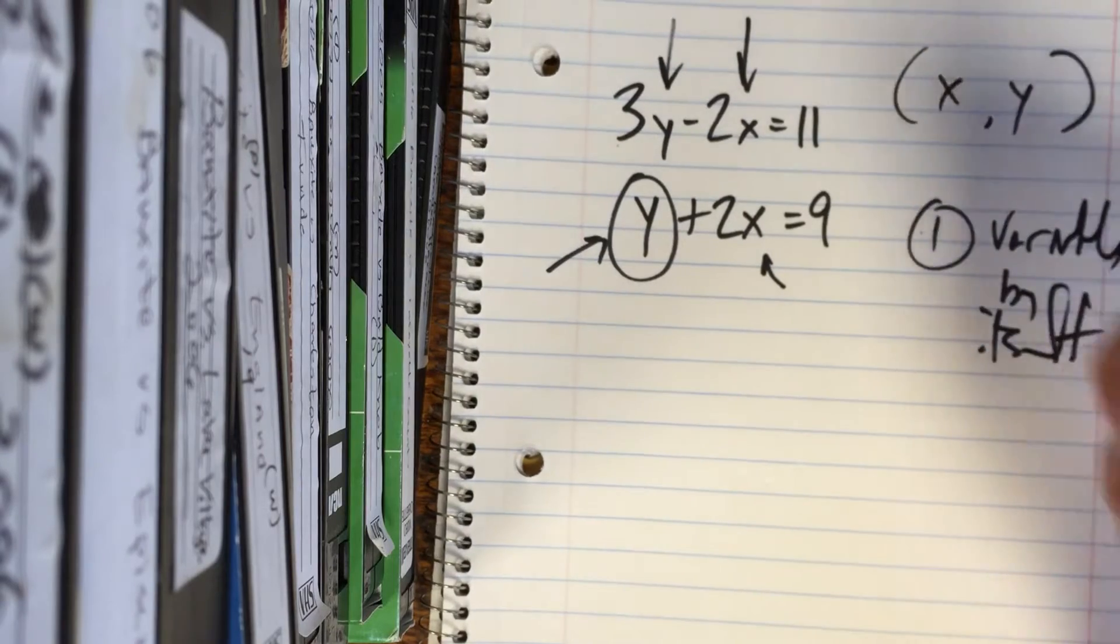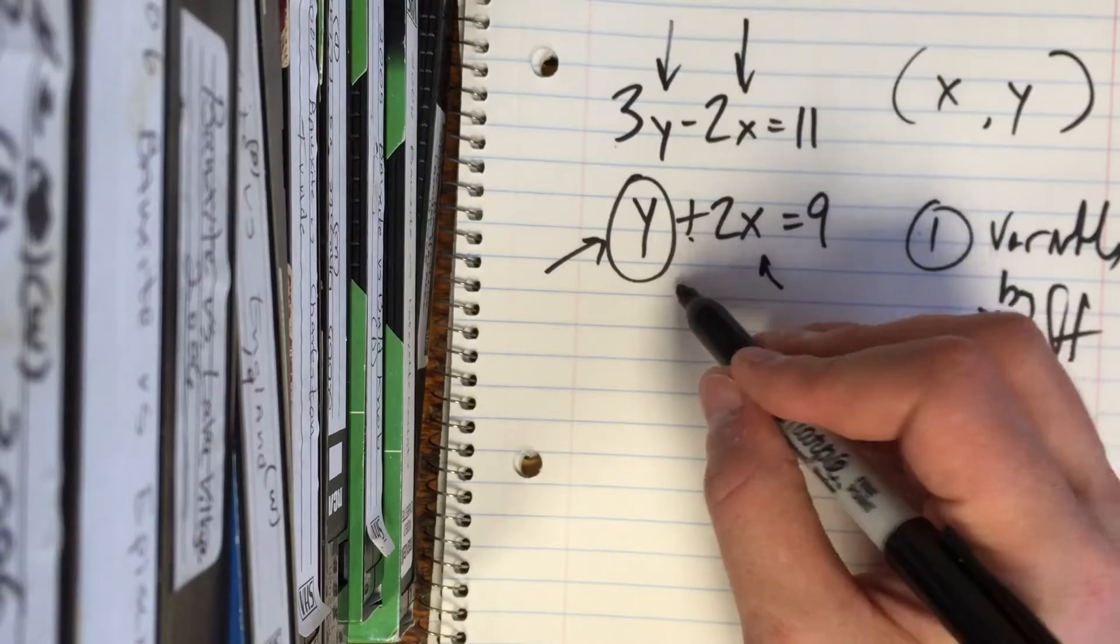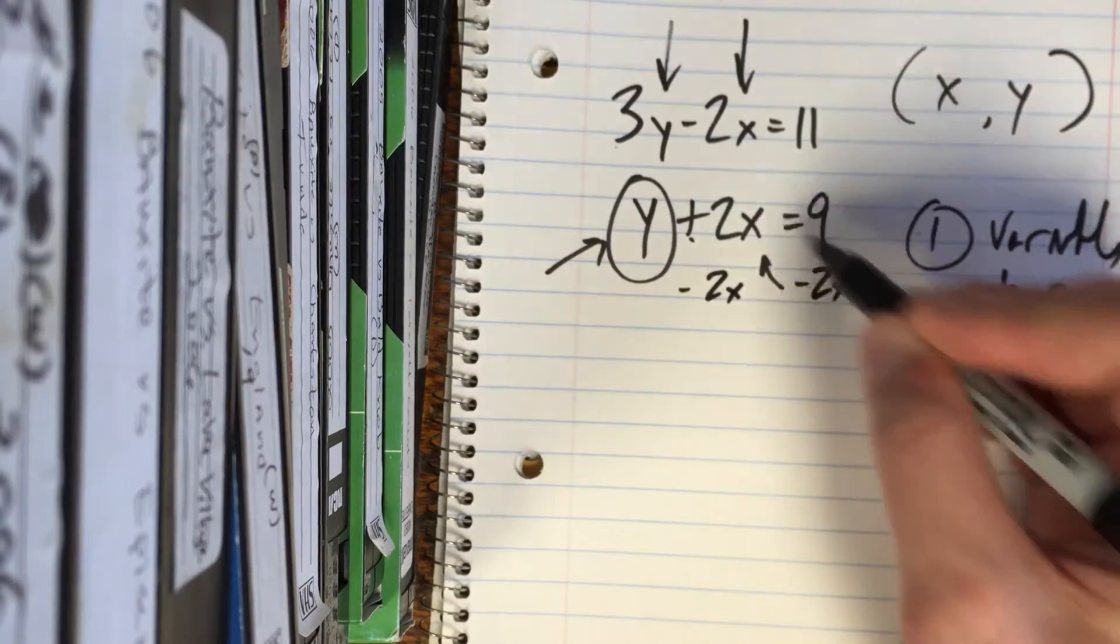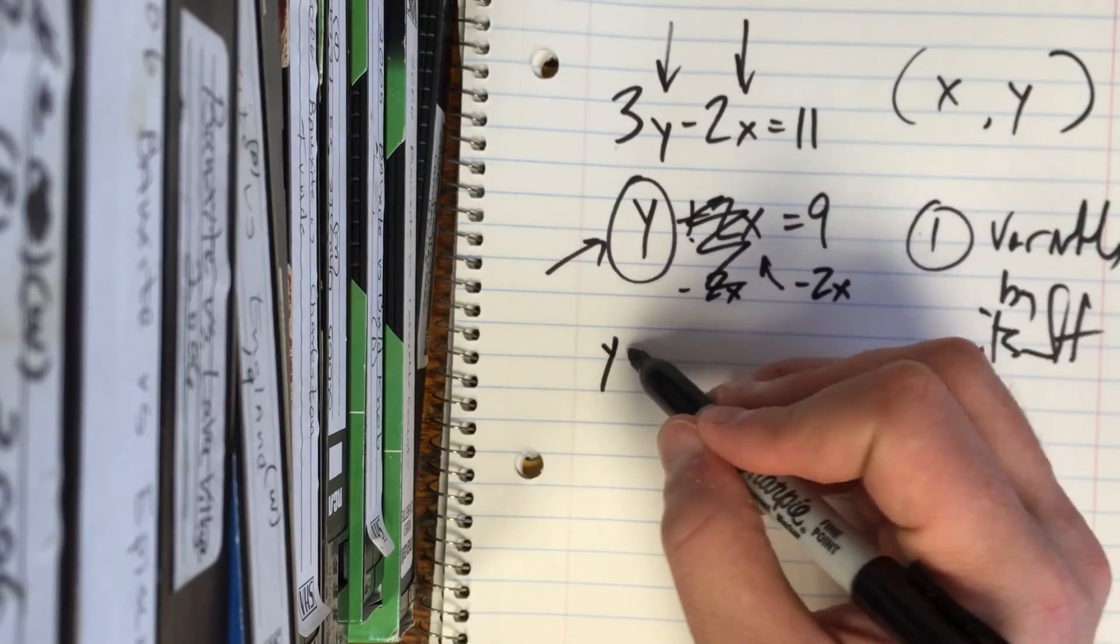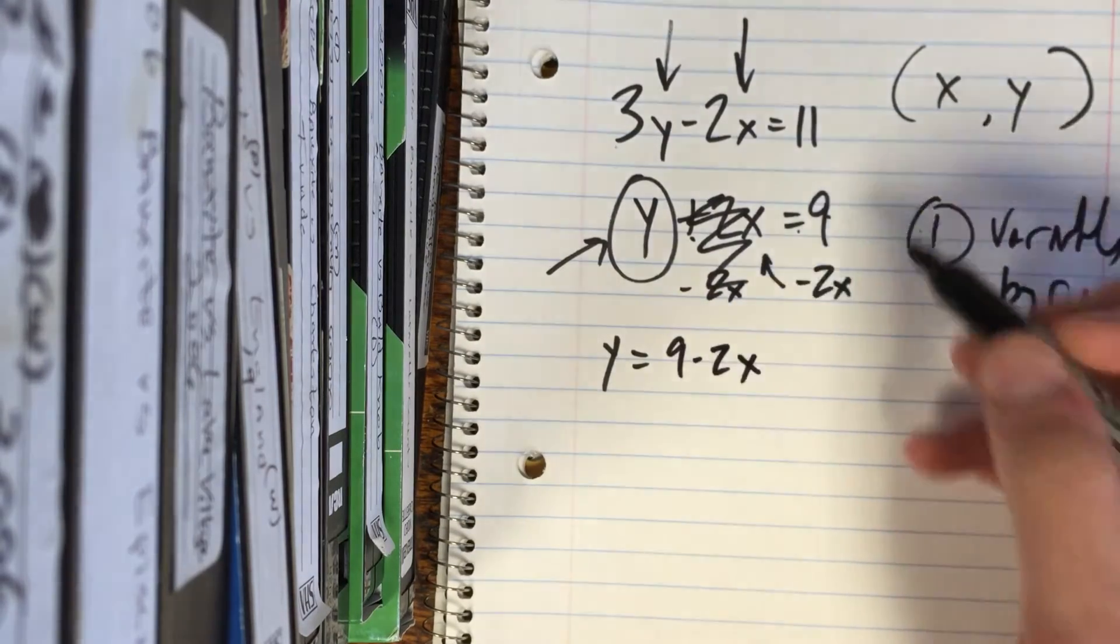Good handwriting, Tyler. Check. Okay, so we want to get that by itself, so we've got to do the opposite of plus 2x, and that means subtract 2x from both sides. It goes away over there, so we've got y equals 9 minus 2x.